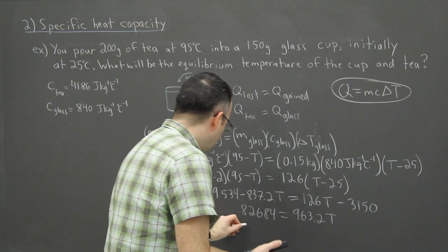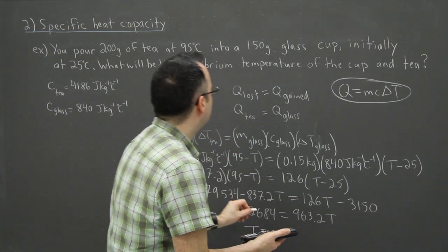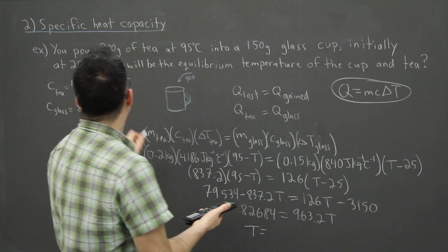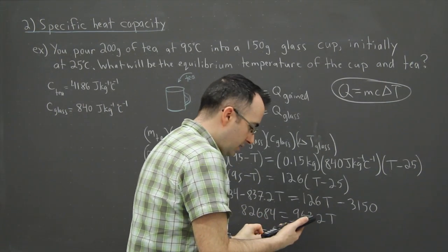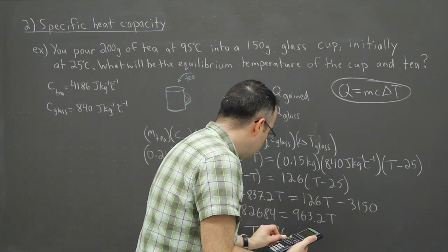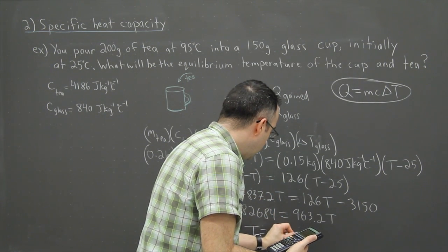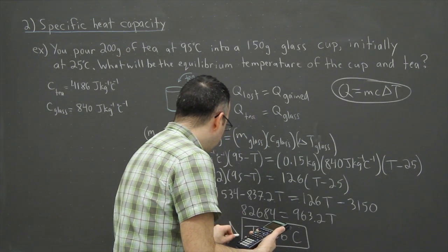So that gives me 82,684 divided by 963.2, and I get an answer finally of T equals, let's see here, I can only use two significant figures. So I'm going to say roughly, it's supposed to be 85.8 is what my calculator says, so I can only use two digits, so I'm going to say 86 degrees Celsius. That's going to be the final answer here.